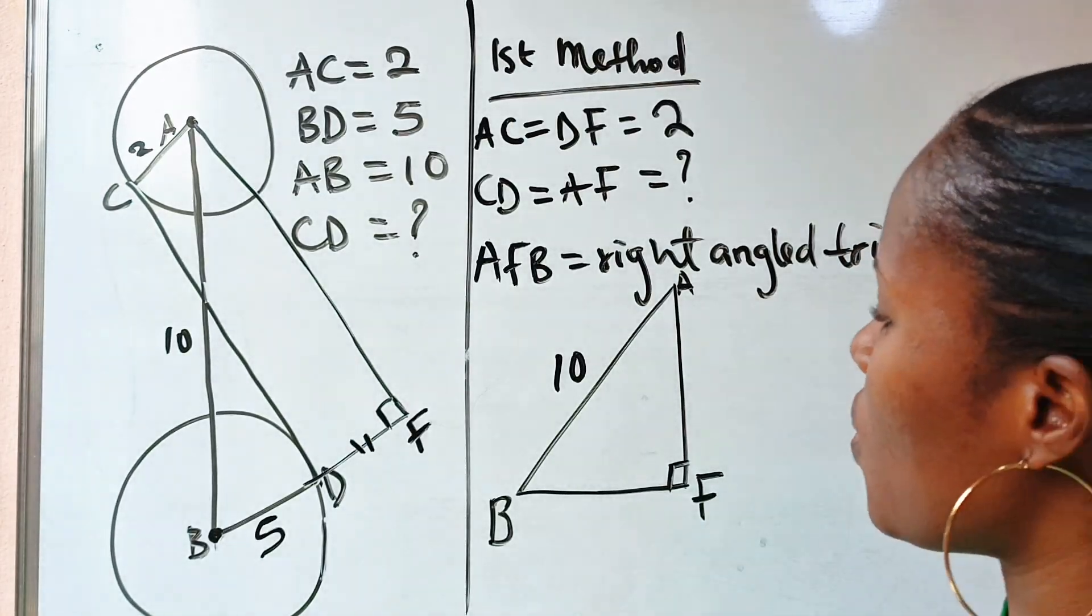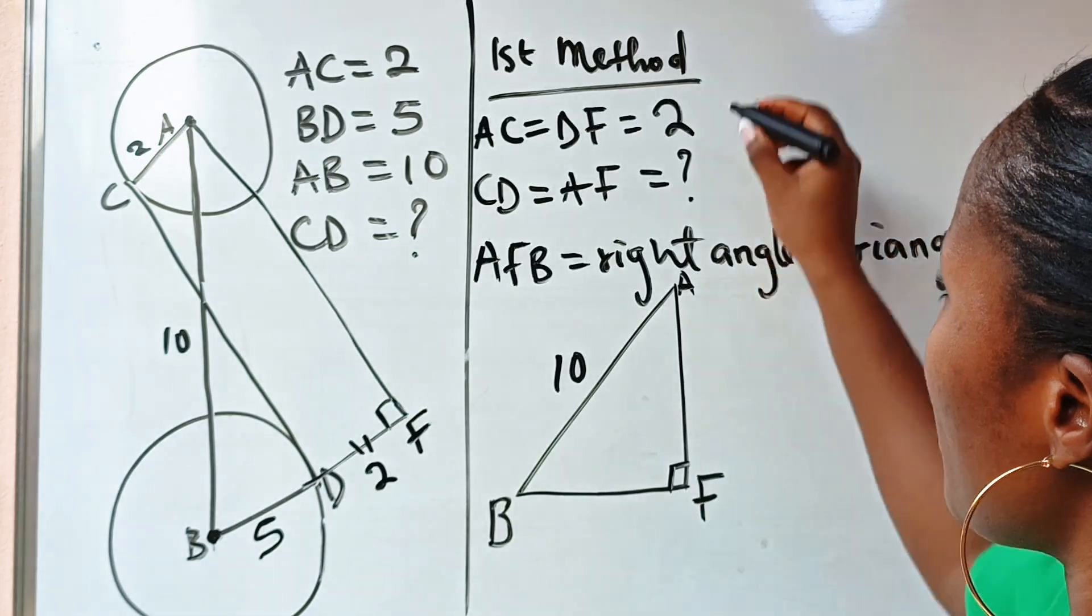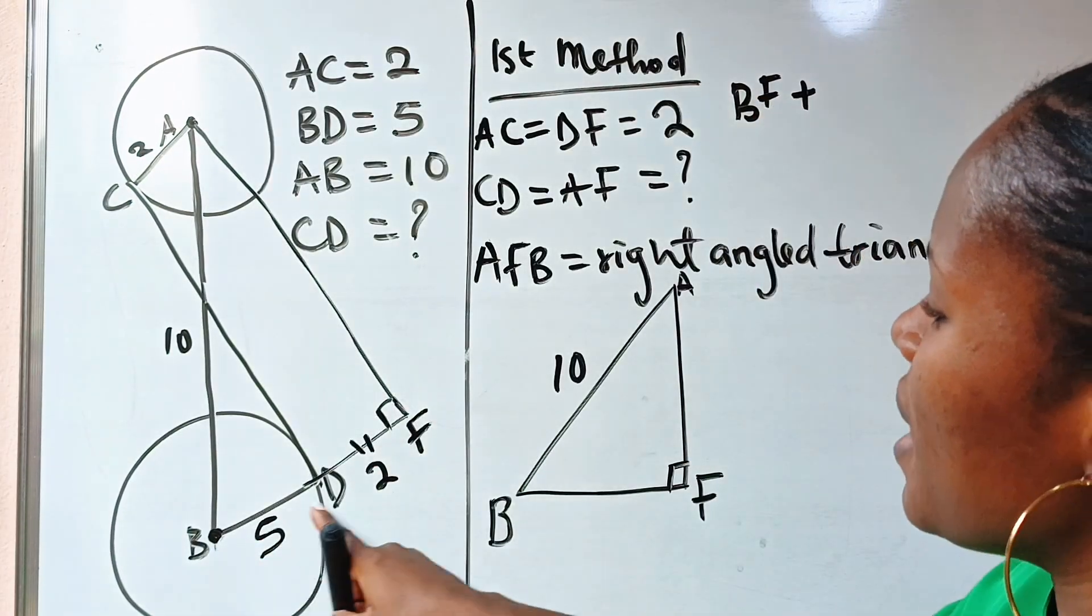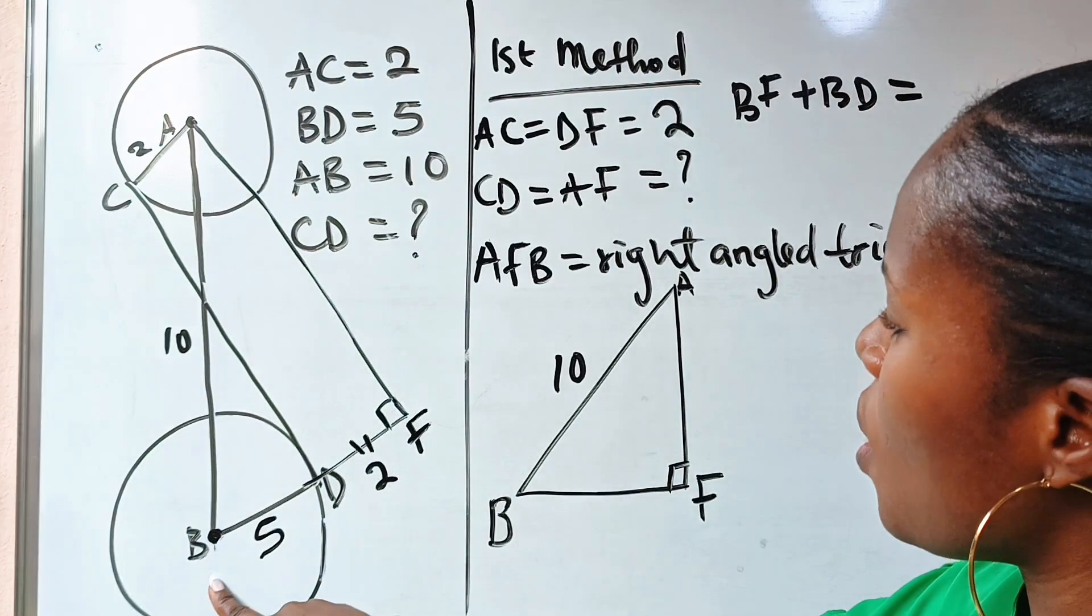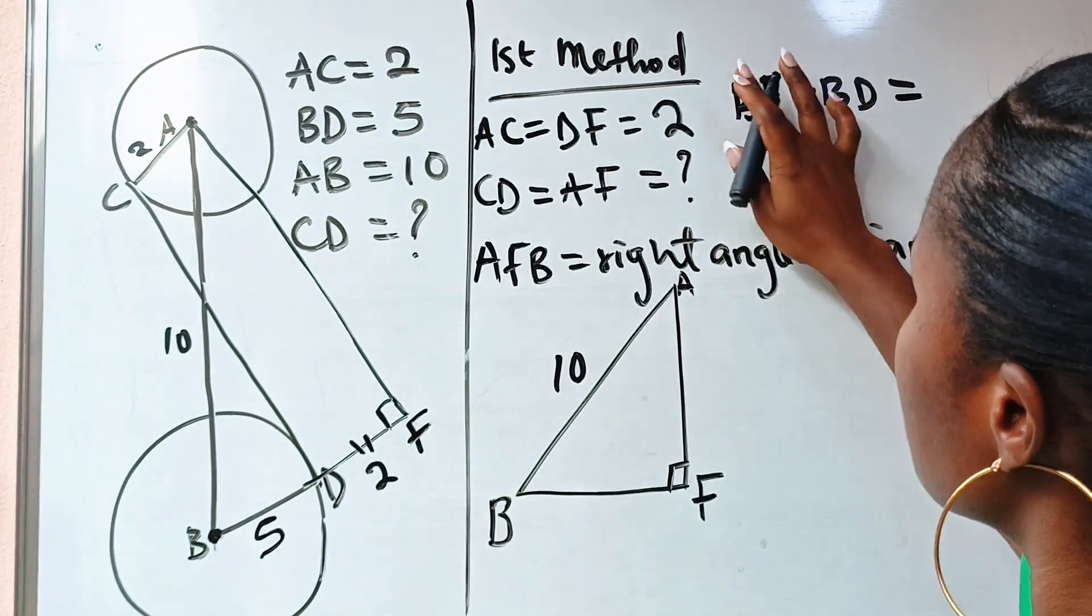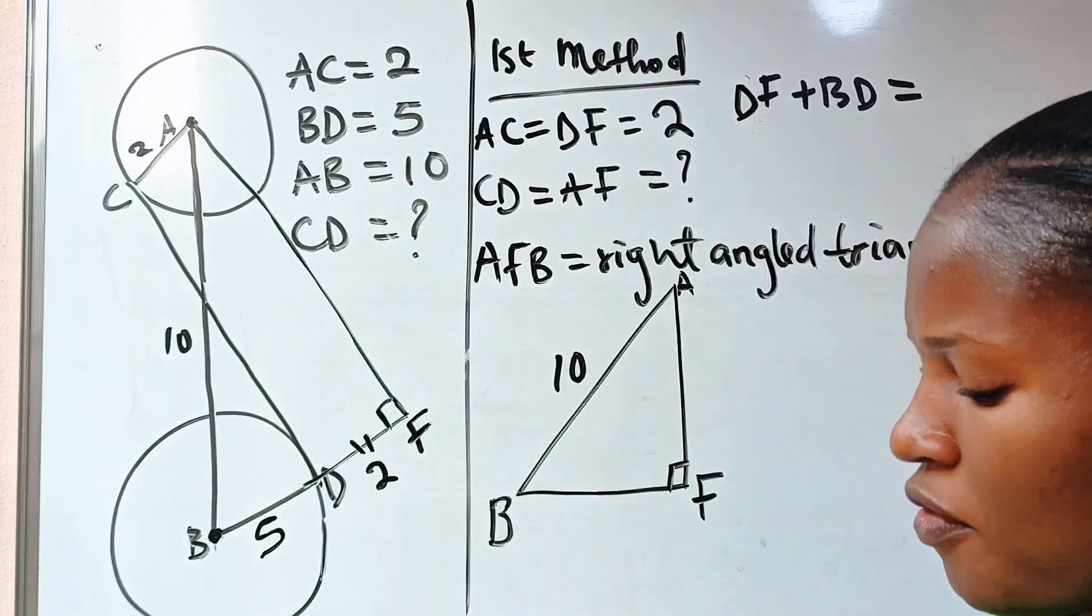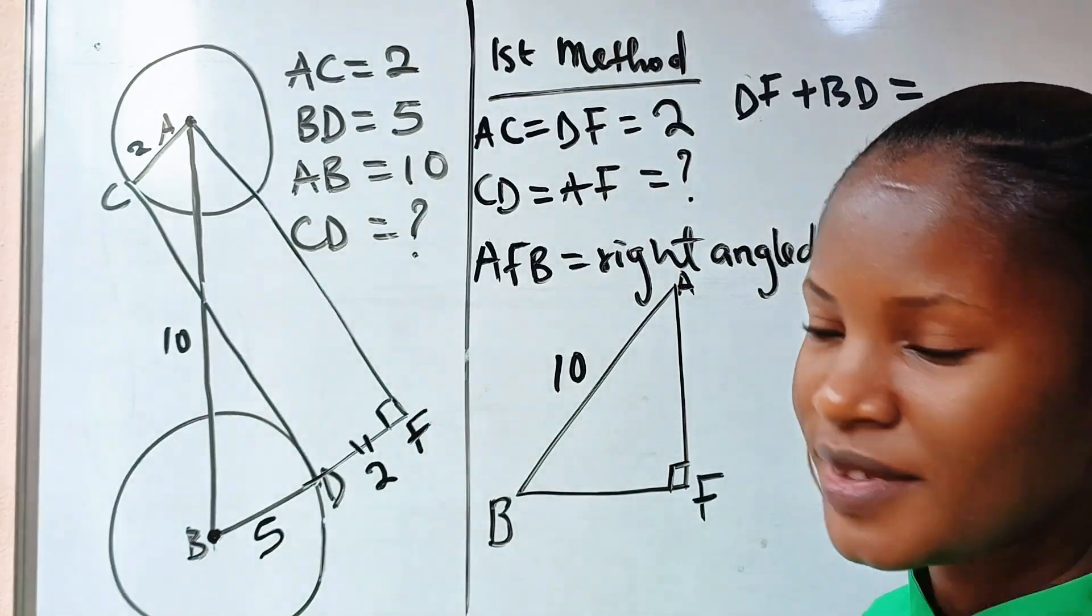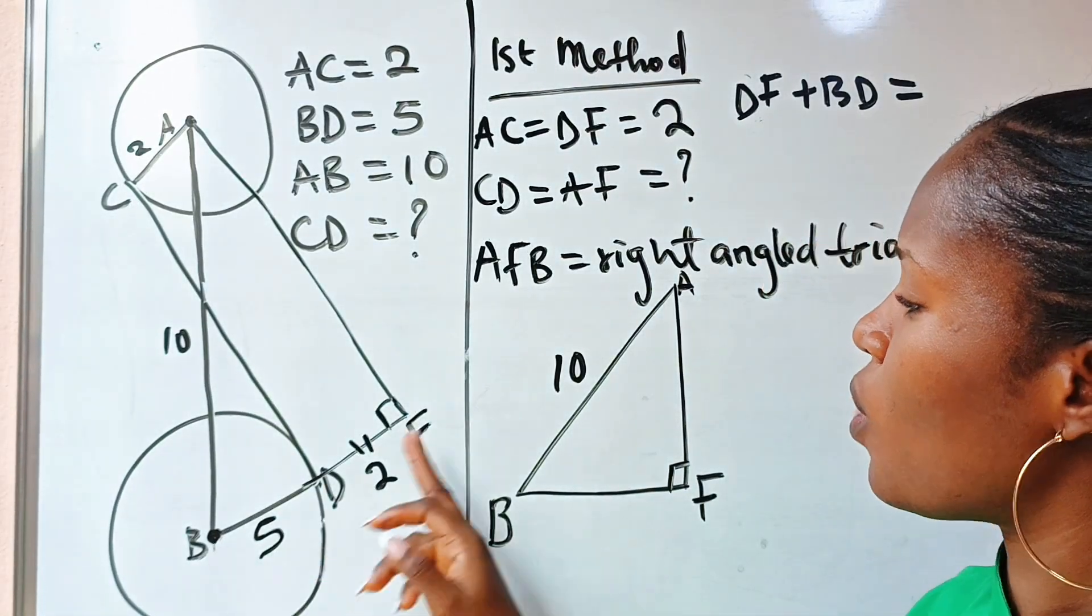BF is what? Remember that this place is two, right? So BF, DF should be equal to BF, right? DF plus BD should be equal to BF.